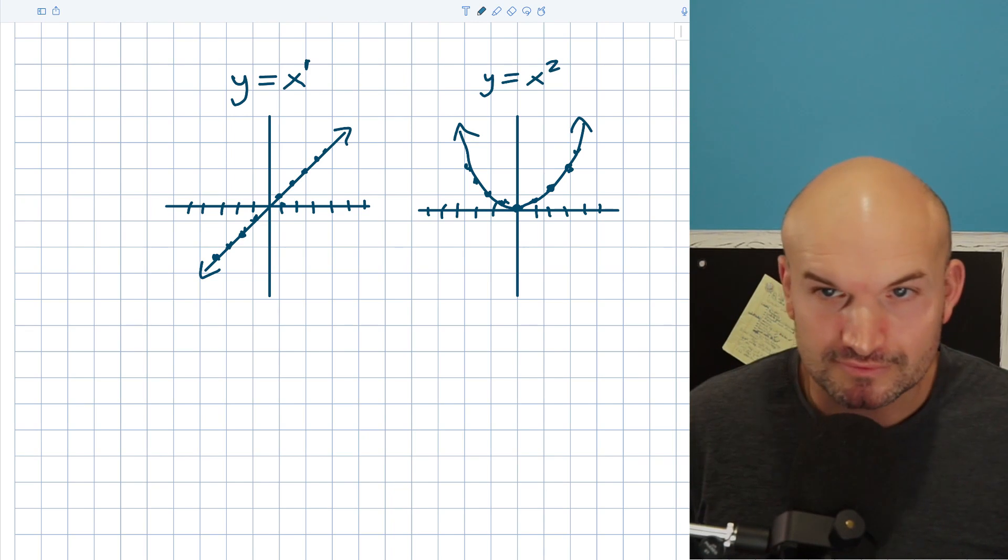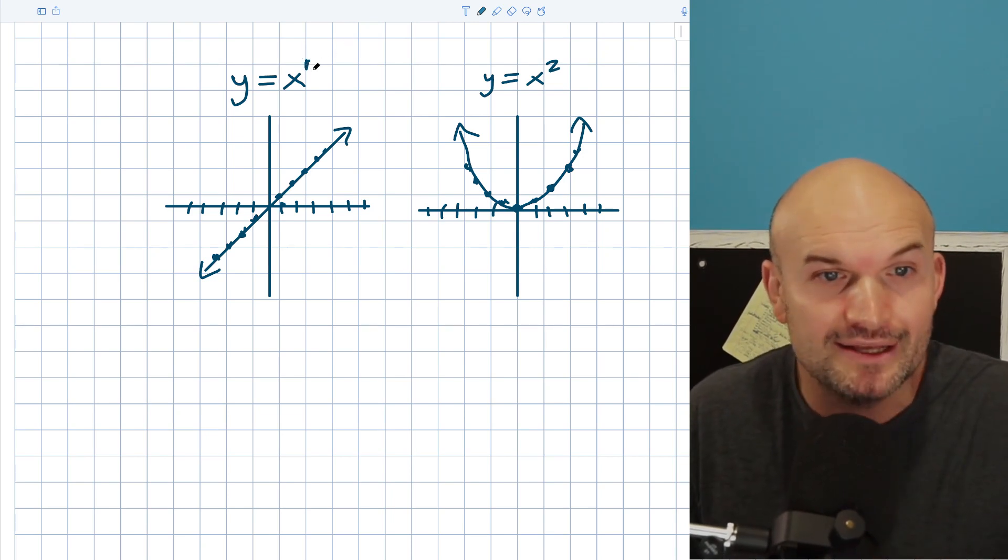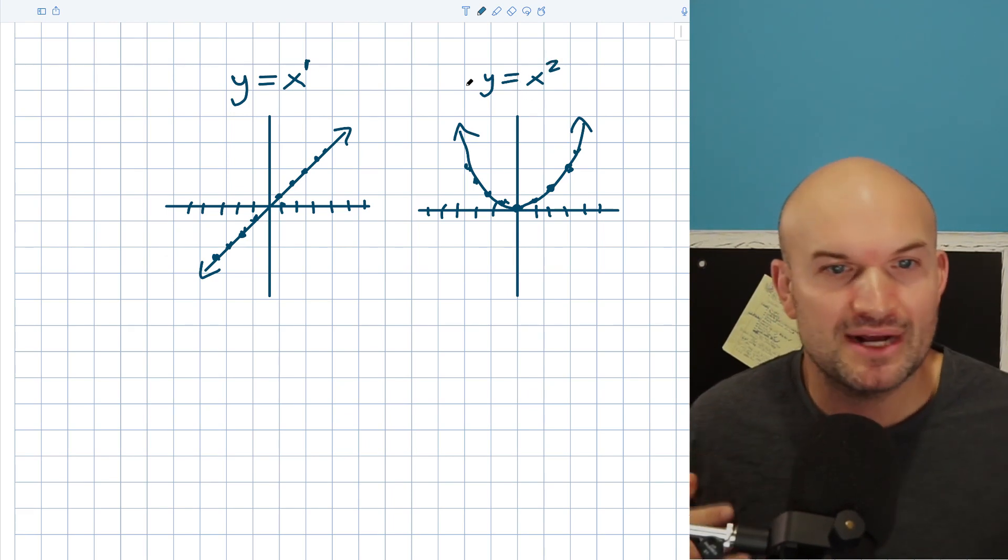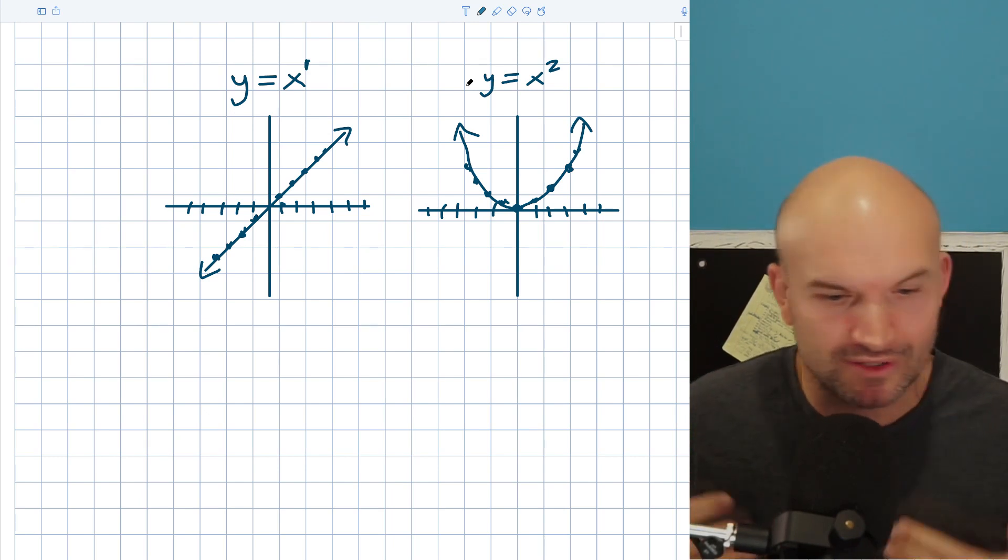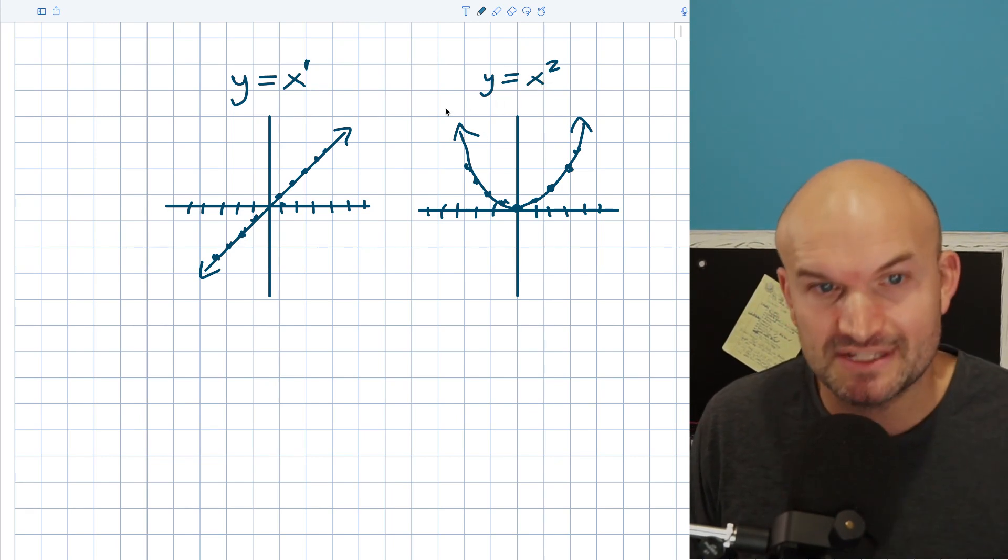Whenever you have a polynomial that has the leading term or the degree of that polynomial is odd, then you're going to have the same behavior as x to the first power. Whenever you have a polynomial that has a degree that is even, then you're going to have the same behavior as y equals x squared. So you don't need to memorize all the different behaviors of what's x to the fourth or x cubed and all kinds of stuff. You just need to know when it's odd, it's going to have this behavior. When it's even, it's going to have this behavior.